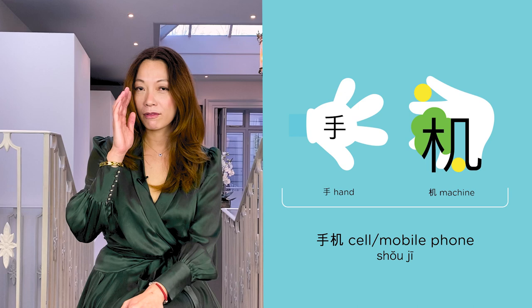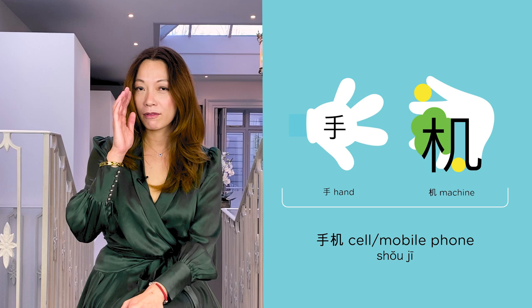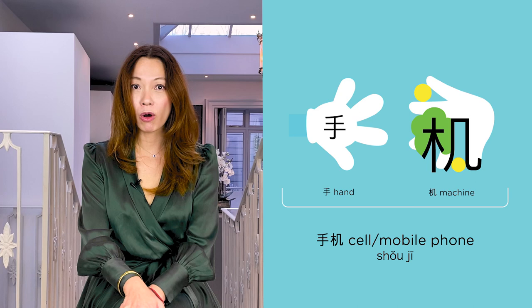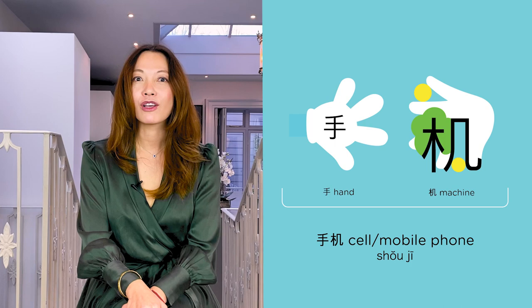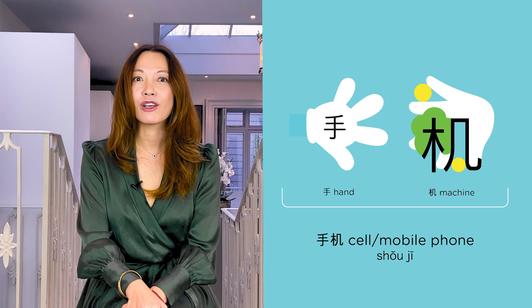To say our handheld device, we say 手机. 手 means hand, so hand machine — that's your mobile phone. 手机. 手 is a third tone, go down and up. 手机.